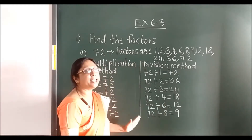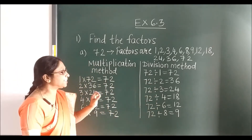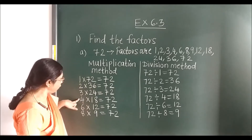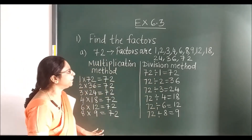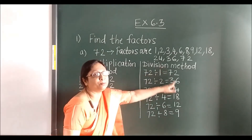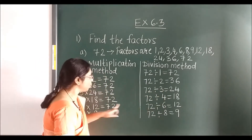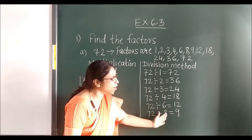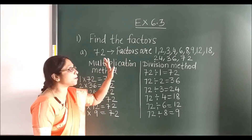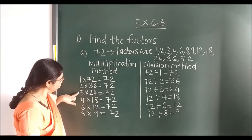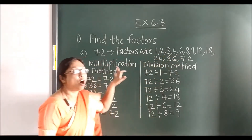Now the division method. In division method, you write 72 with a divide sign. Easy step — same numbers: 1, 2, 3, 4, 6, 8. Put an equal to sign and write the second numbers: 72, 36, 24, 18, 12, and 9. You need not carry out the full division — just from the multiplication method you can write the division method. After that, the factors of 72 are: 1, 2, 3, 4, 6, 8, 9, 12, 18, 24, 36, 72.